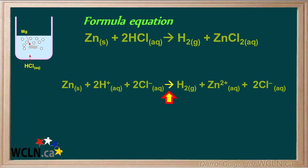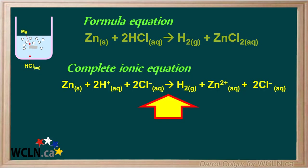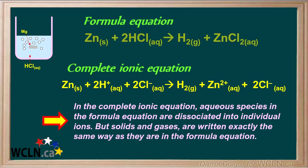We'll add an arrow here to make this an equation. This is called the complete ionic equation for this reaction. In the complete ionic equation, aqueous species from the formula equation are dissociated into individual ions, but solids and gases are always written exactly the same way as they are in the formula equation.